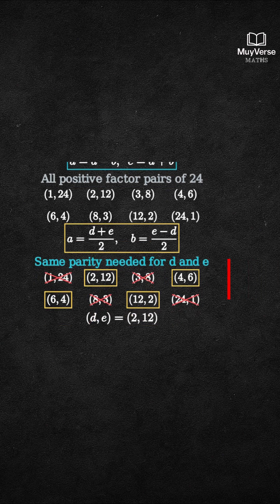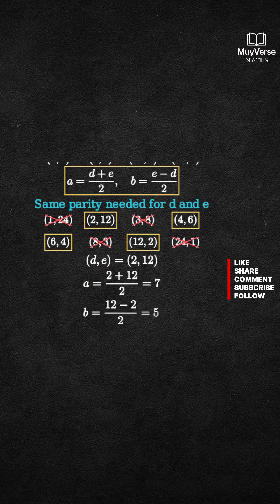Next, d equals 4 and e equals 6. Then a equals (4 plus 6) over 2 equals 5, and b equals (6 minus 4) over 2 equals 1. Valid.